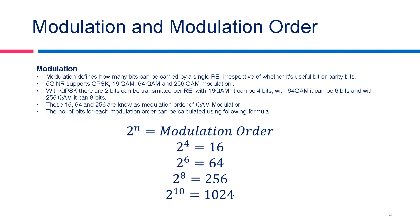Modulation defines how many bits can be carried by a single resource element, irrespective of whether it is a useful bit or parity bits. 5G NR supports QPSK, 16 QAM, 64 QAM, and 256 QAM for the data channel, or PDSCH channel. With QPSK, 2 bits can be transmitted per resource element; with 16 QAM it can be 4 bits; with 64 QAM it can be 6 bits; and with 256 QAM it can go up to 8 bits per resource element.